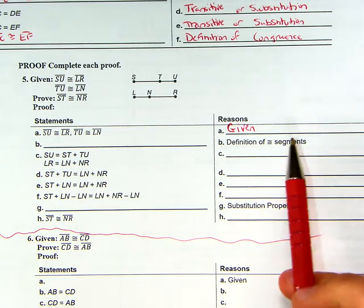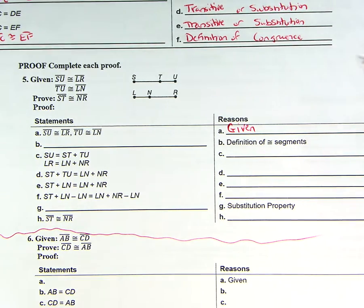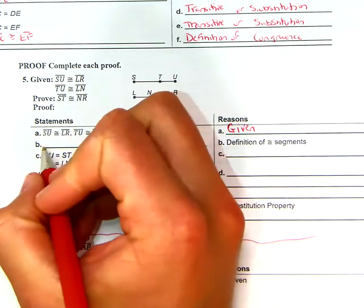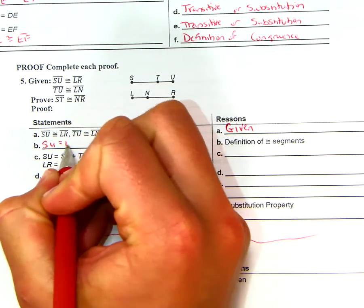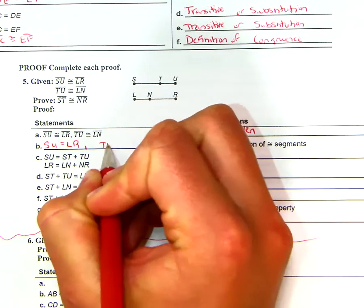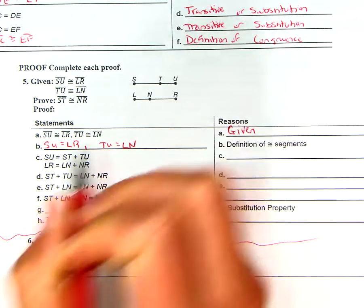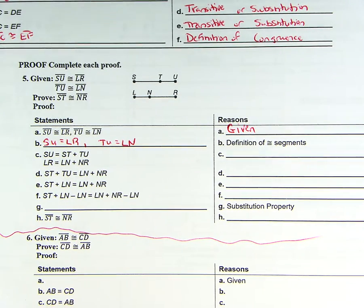Definition of congruence segments, that's just this definition of congruence that I'm using. So we're just going to change this to be SU equals LR and TU equals LN. So once we have that, we go to C.